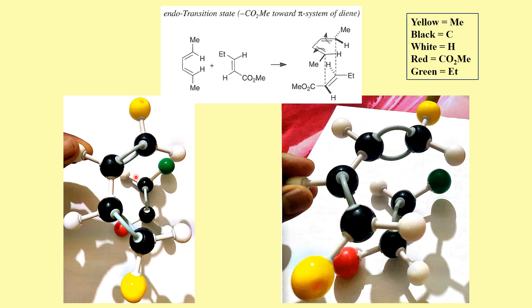What does the endo transition state mean? Here I have represented the molecular model of 1,4-dimethylbutadiene. The color scheme is: yellow is the methyl group, black represents carbon, white is hydrogen, red is the ester group, and green is the ethyl group. Now, there are two ways this butadiene can align with the acrylate.